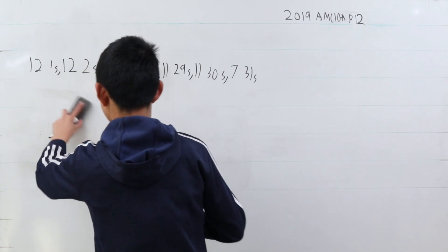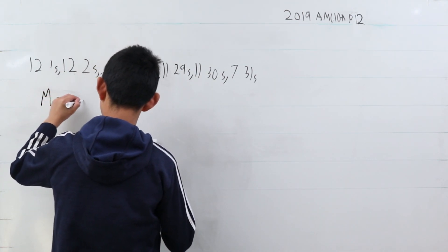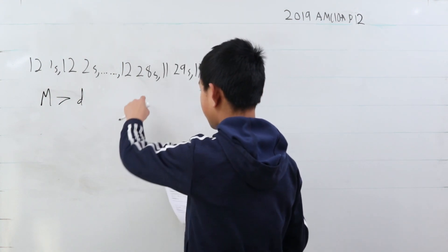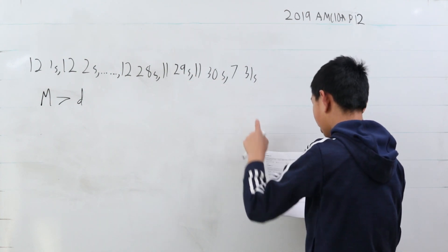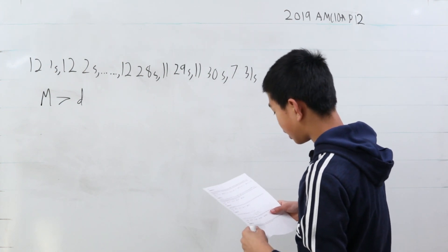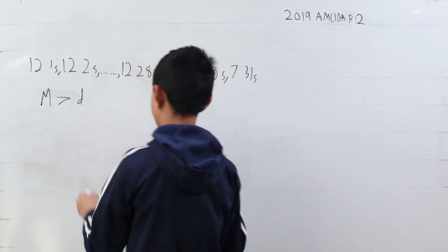We can write that. This m is greater than d because they're both medians, except this one's not incorporating the 29s, the 30s, and 31s. Now, the mean μ is a bit more tricky, but let's just get back to the m.